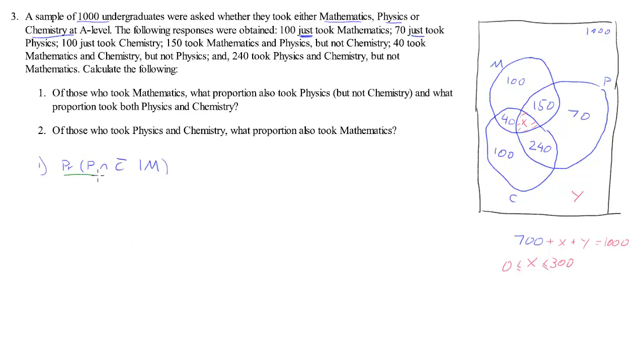Actually what we should do is make that green. And so we should mark as green this bit. Physics and no chemistry. Conditional on maths. So conditional on maths means we are looking at that green circle only. Chemistry and then physics but no chemistry. So physics is this bit but no chemistry means only this area.